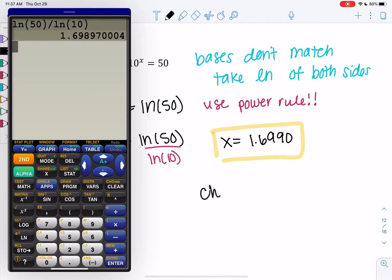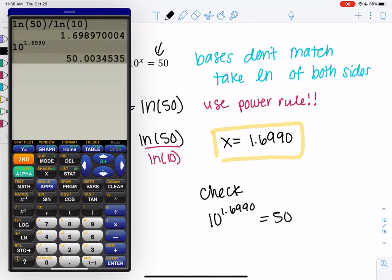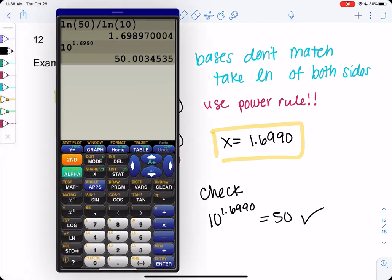And we could check. So 10 to the 1.6990 in the original equation. Yeah, and it's almost 50. It's a little off because of rounding, but yeah, it equals 50. All right, let's try one more.